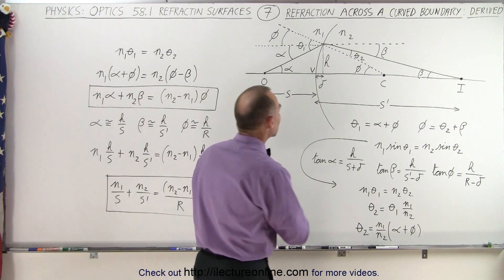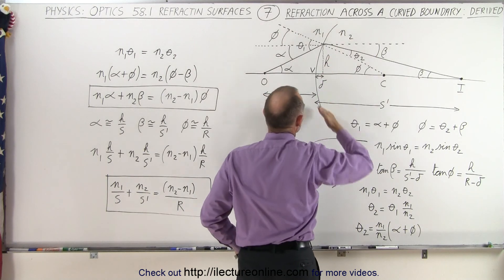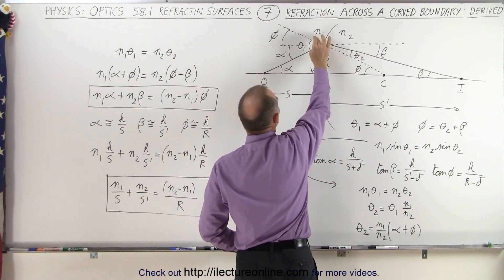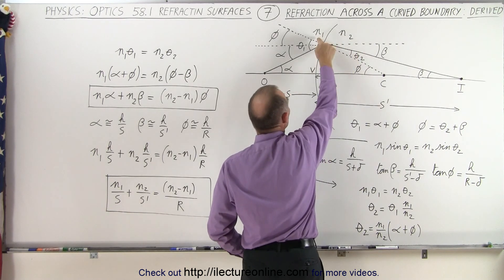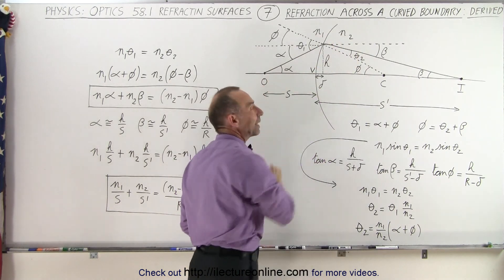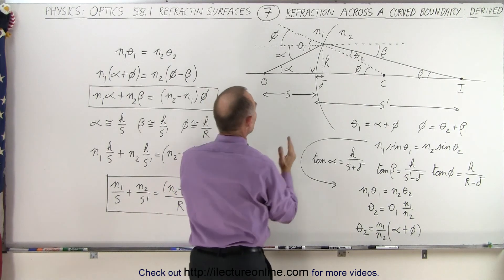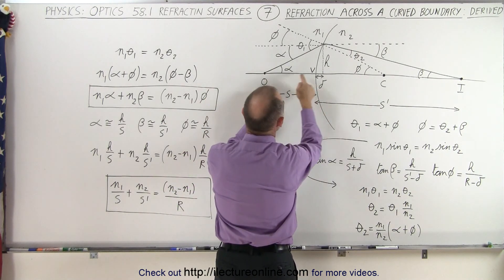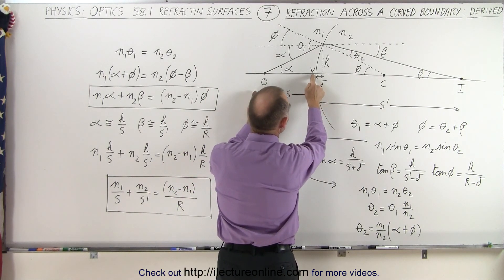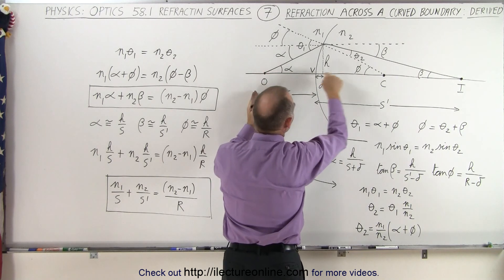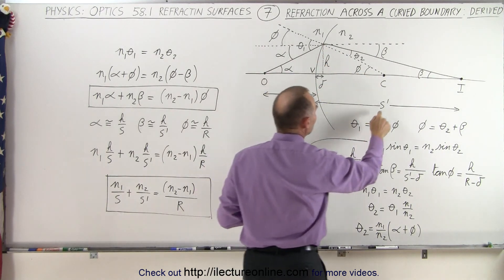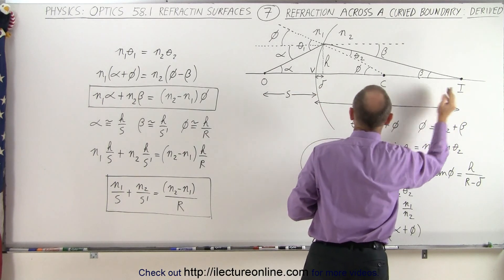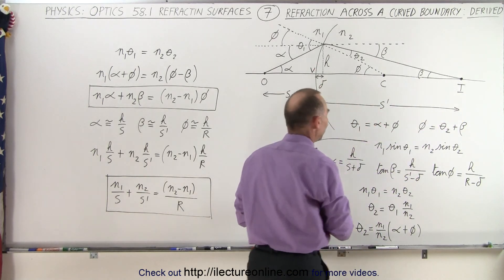What we have here is a curved boundary. To the left we have index of refraction n1, and to the right index of refraction n2. n1 is on the left because that's where we place the object — at distance s from the vertex, the point where the optical axis crosses the boundary. s prime is the distance from the image to the vertex.